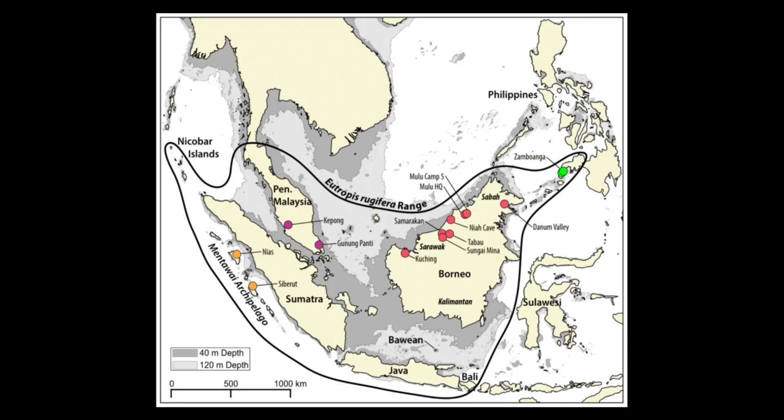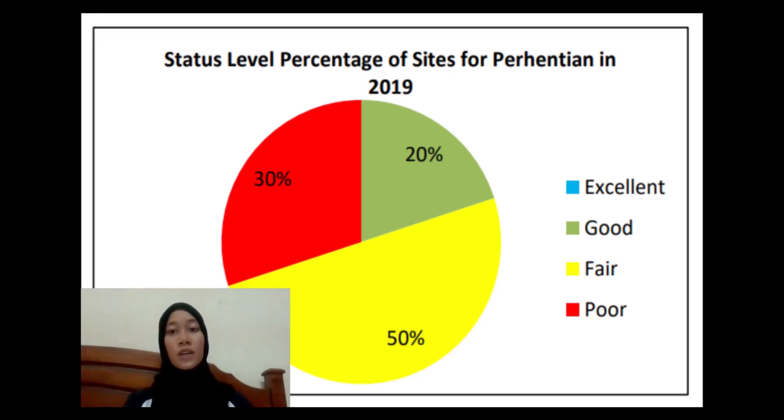The data is an overview of the health of coral reef surveys in three ecoregions in Malaysia, using live coral cover as a key indicator. In the Sunda Shelf, a total of 10 coral reef sites were surveyed in Perhentian and 50% of the reef were in fair condition, where 20% were in good condition and the remaining 30% were in poor condition.